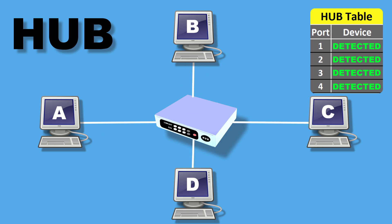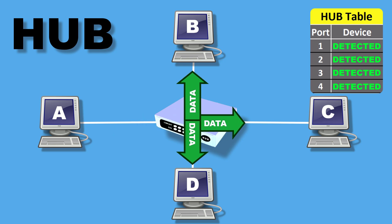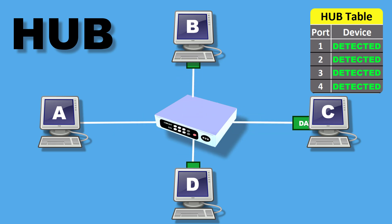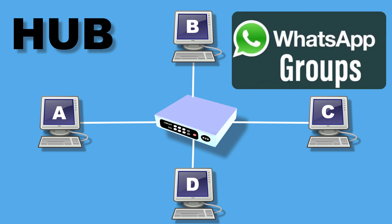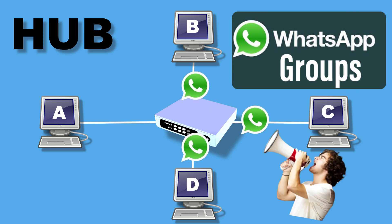Hub is considered not intelligent because it does not filter any data and does not know where the data is to be sent in the network. Hub is just like a WhatsApp group — if anyone sends a message in a group, every member receives it.